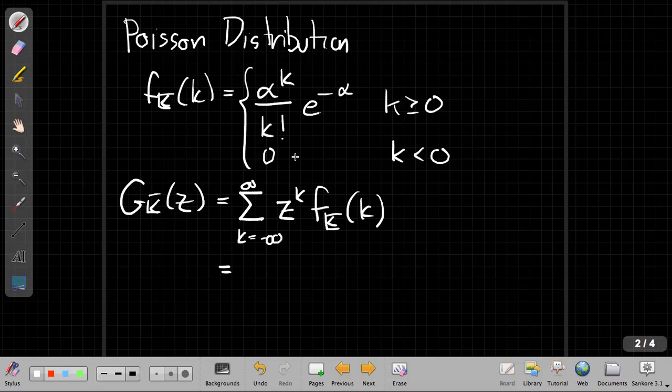And we can immediately simplify this since all the negative values of k have a PMF of zero. So I can say this is the sum as k goes from zero to infinity of z to the k, and now I'm going to plug in the terms from above.